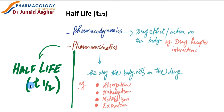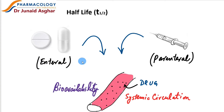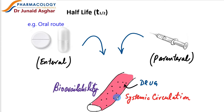When we talk about half-life, we are talking about a pharmacokinetic parameter. T½ is the symbol that represents half-life. Whatever the route of drug administration — whether enteral or parenteral — the whole point is that the drug gets to the systemic circulation, which is called the bioavailability of the drug. Optimal plasma concentration is required to achieve an optimal pharmacodynamic effect.